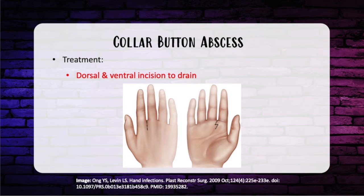Collar button abscess is a web space infection of the fingers. Because of its location, patients complain of pain on adduction of the fingers — you might see a picture showing fingers separating away from each other at the web space infection site. In contrast to flexor tenosynovitis, flexion and extension are okay, but adduction is painful. Treatment requires both a dorsal and ventral incision, because the abscess looks like an hourglass sitting between the ventral and dorsal compartments, so you must drain it from both sides.